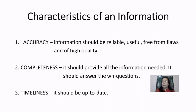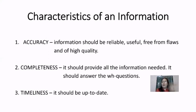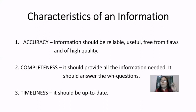Let us have the second characteristic, which is completeness. It should provide all the information and it should answer the WH questions. When we say good or true information, it should always be complete. The WH questions are: who, what, when, where, why, and how. If the information can answer all those six WH questions, meaning that information has completeness.